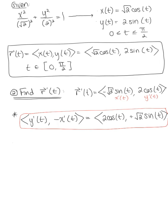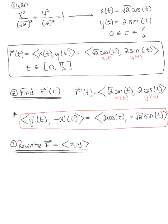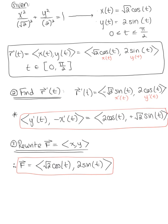Before we can take the dot product, we need to rewrite the vector field. We rewrite the given vector field (x, y) in terms of t using the components of the parameterization. Therefore our vector field becomes (√2·cos(t), 2·sin(t)).